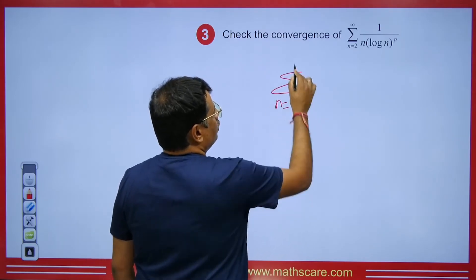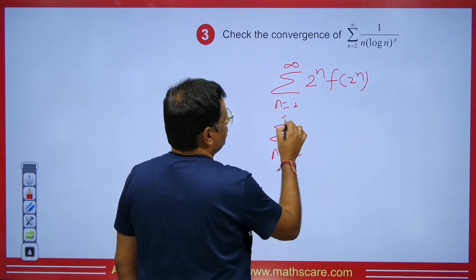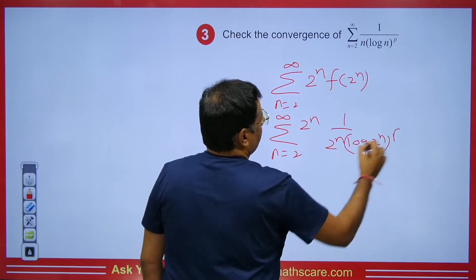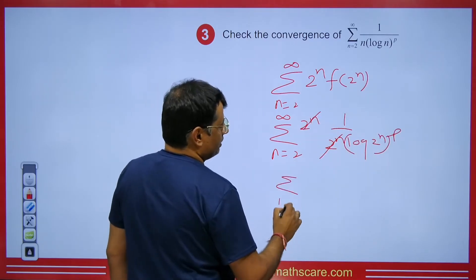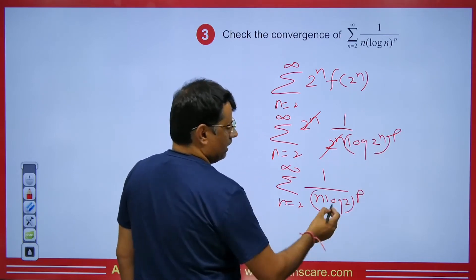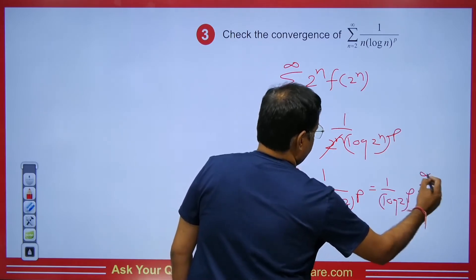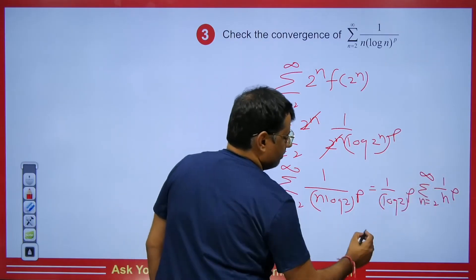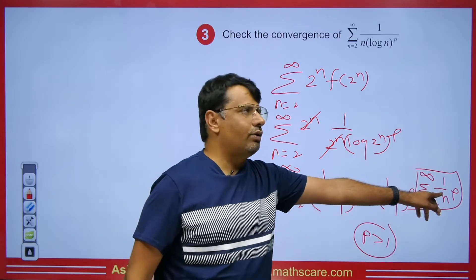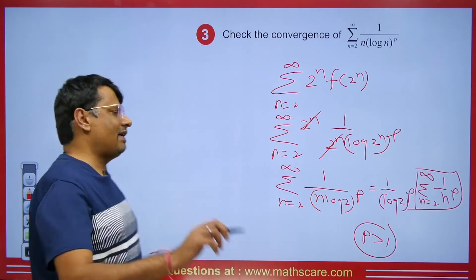What we will do here: summation n = 2 to infinity, and we check 2^n · f(2^n). So summation n = 2 to infinity gives us 2^n times 1 upon 2^n, times (log 2^n)^p. These two 2^n terms cancel out. Then summation n = 2 to infinity: the power moves in front, giving 1 / (n log 2)^p. Taking out (log 2)^p as a constant, we get (1/log 2)^p times summation 1 / n^p. By the p-series test: if p > 1, it is convergent; if p ≤ 1, it is divergent.